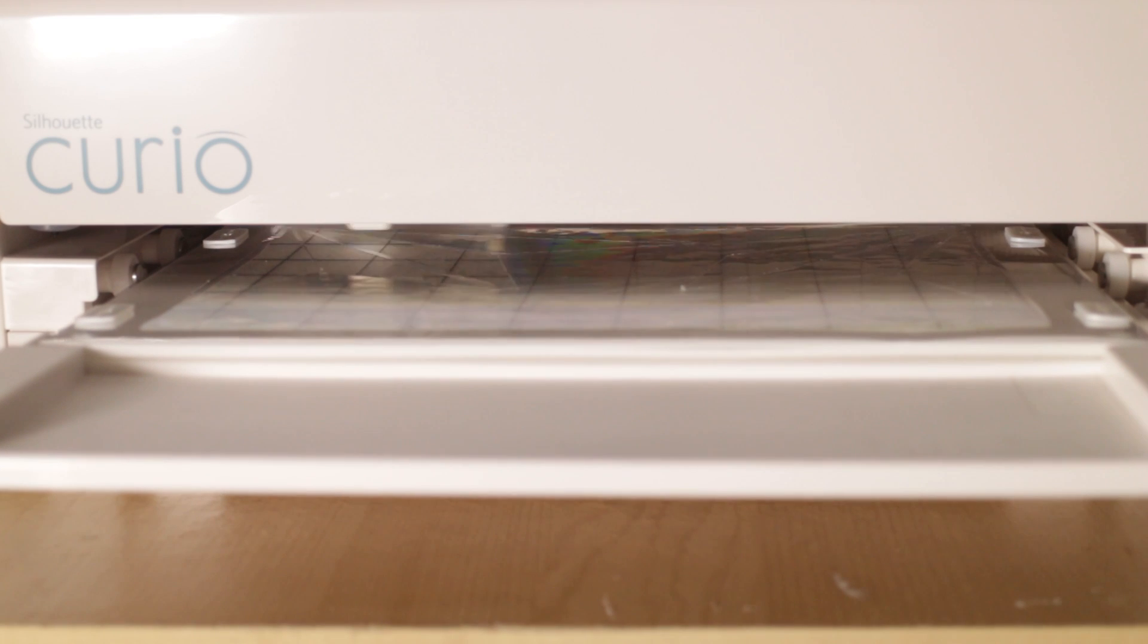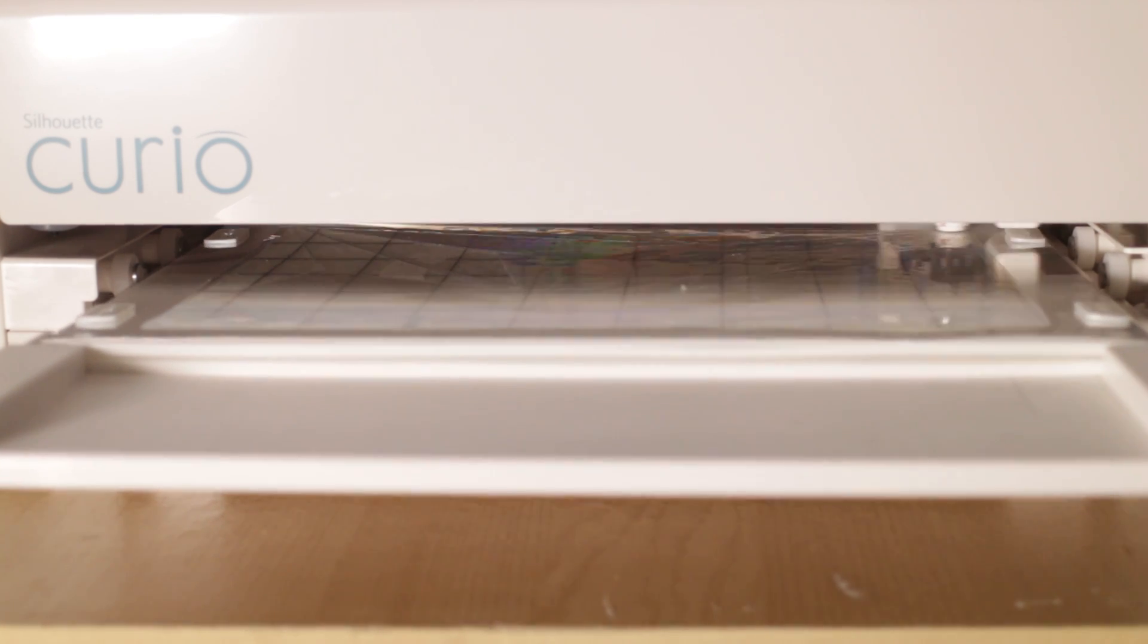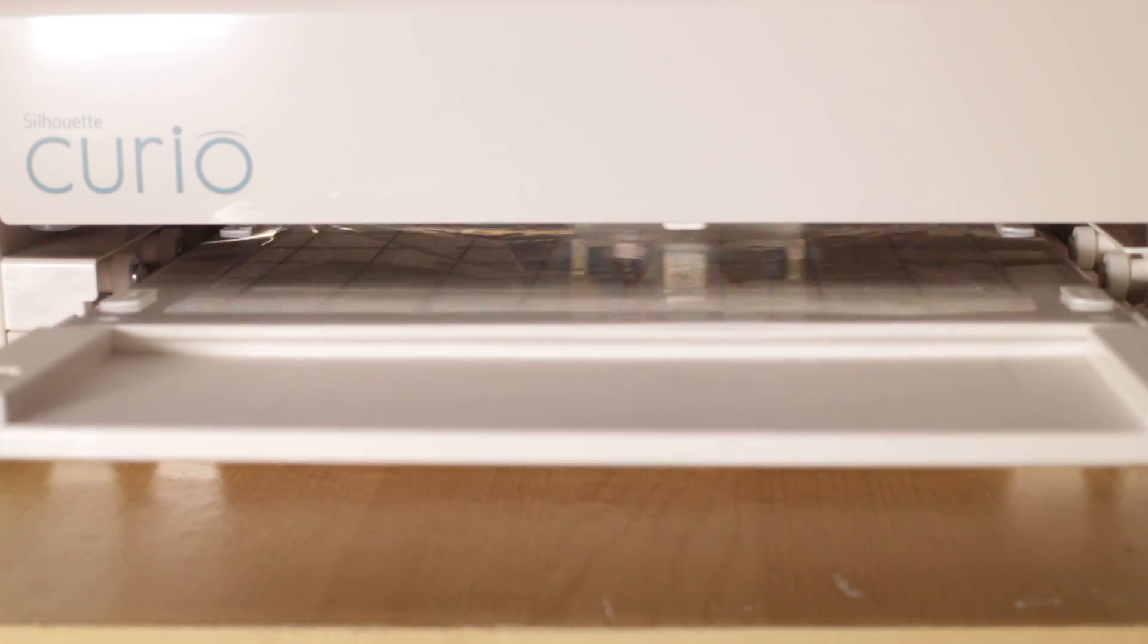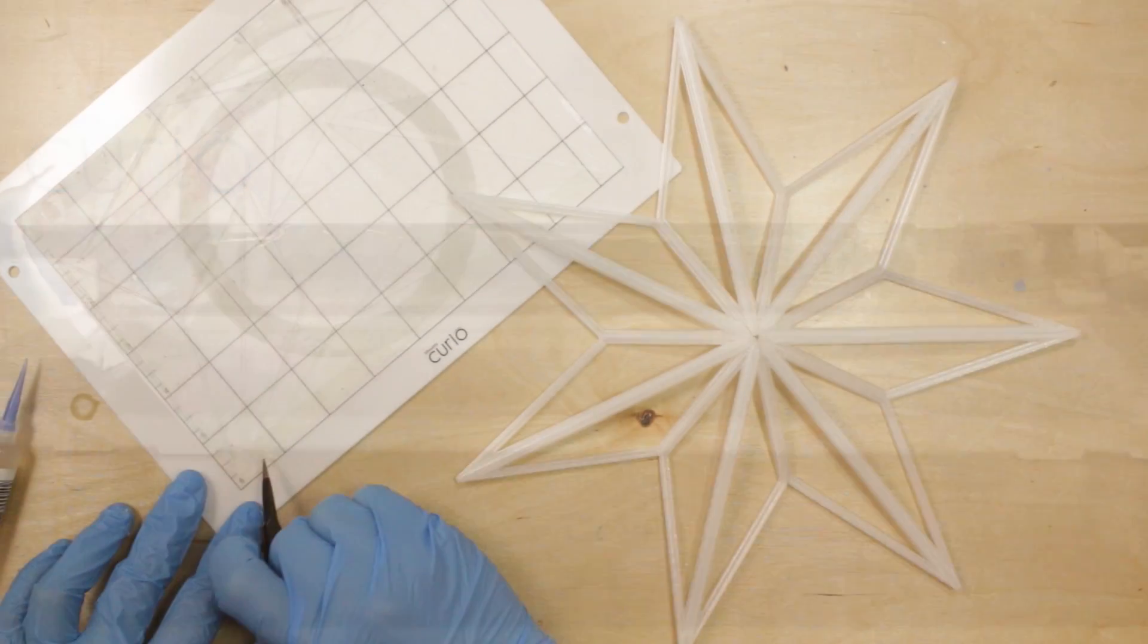The diffraction grating was cut with the help of a Silhouette Curio, using an exported drawing from my original Fusion 360 design. This was the first project I ever made using the Curio, but it seems really capable for its little desktop size.